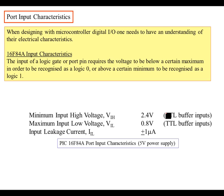Let's look at the input-output characteristics of the ports. When designing a microcontroller, digital I/O one needs to have an understanding of their electrical characteristics. The input of a logic gate or port pin requires the voltage to be below a certain maximum in order to be recognized as a logic zero, or above a certain minimum to be recognized as a one. So on the data sheet, you'll see these values called VIH or VIL. You need to know what these mean. It's called maximum input high voltage, maximum input low voltage. What this means is, in order to be considered a low voltage, you need to have a voltage from zero to 0.8.